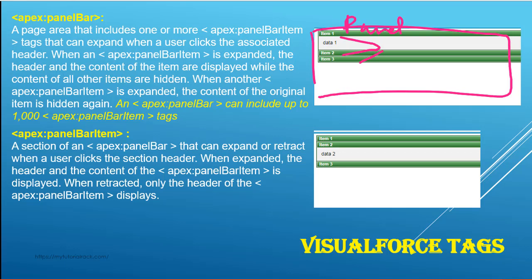Now when you click on item 2, the contents of item 1 will be hidden and the contents of item 2 will be displayed. And once you click on item 3, the contents of item 2 will be hidden and it will show you the contents of item 3. This is how the panel bar works.